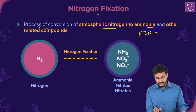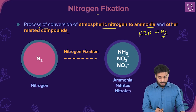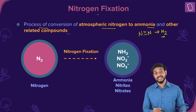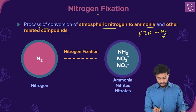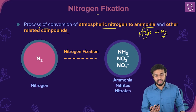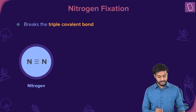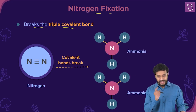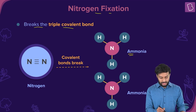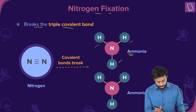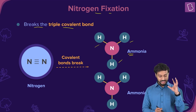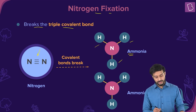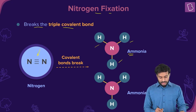N2 has a triple bond — N≡N. If other molecules like NH3, NO2⁻, or NO3⁻ need to be formed, then bonds need to be rearranged. Nitrogen fixation breaks the triple covalent bond, which makes it possible to form ammonia — nitrogen bonded to three hydrogen atoms. This is only possible when the triple covalent bond is broken.